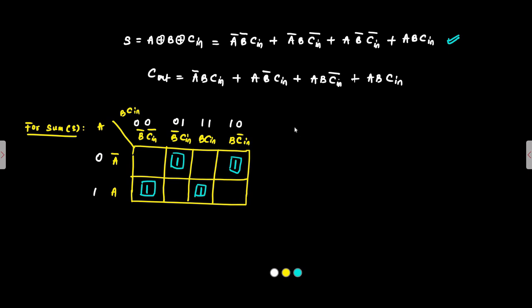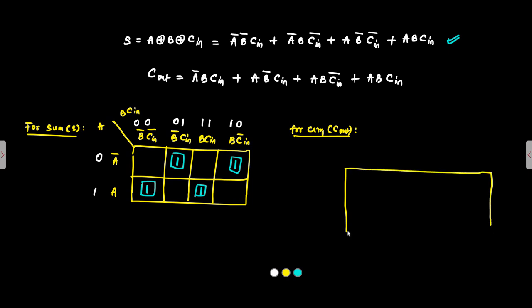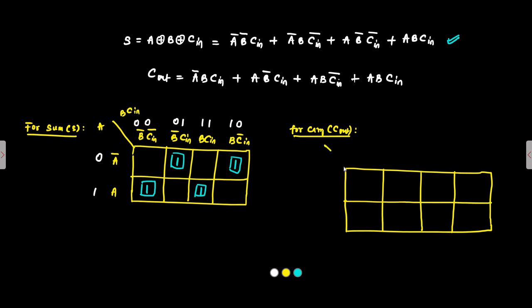Now, for the Carry output, let us draw the K-map. This side is A, this side is B·C-in. The columns are labeled 00, 01, 11, 10. This side is A-bar, this is A, and this side will be B-bar·C-in, giving us the standard three-variable Karnaugh map layout for the carry expression.